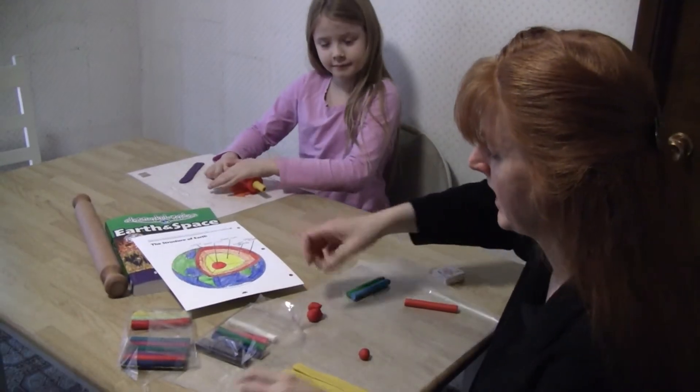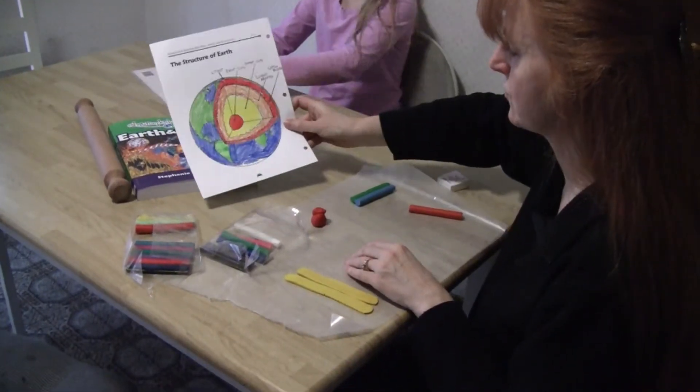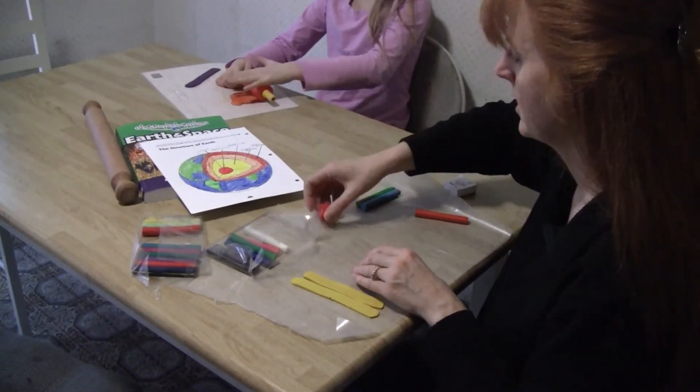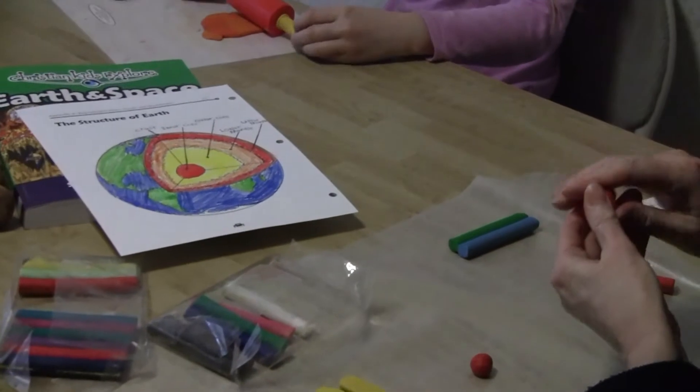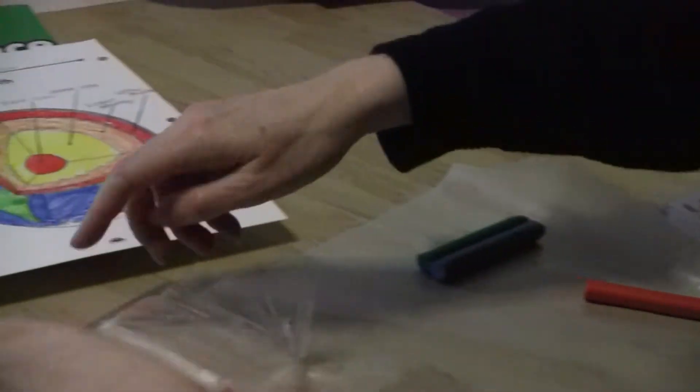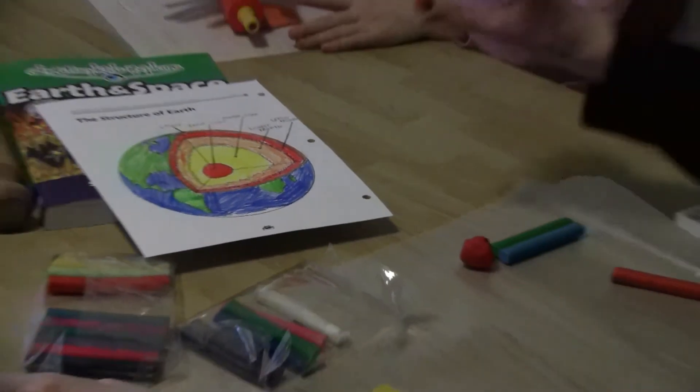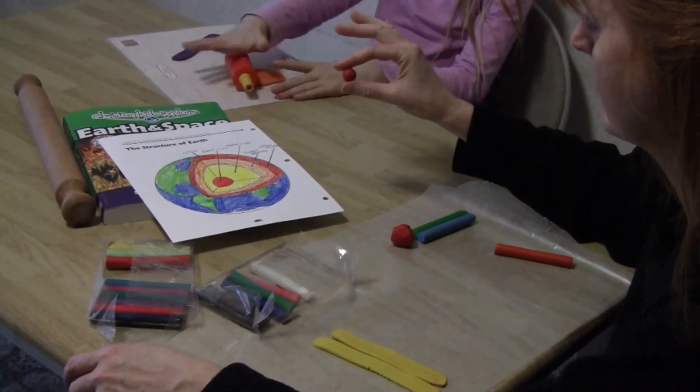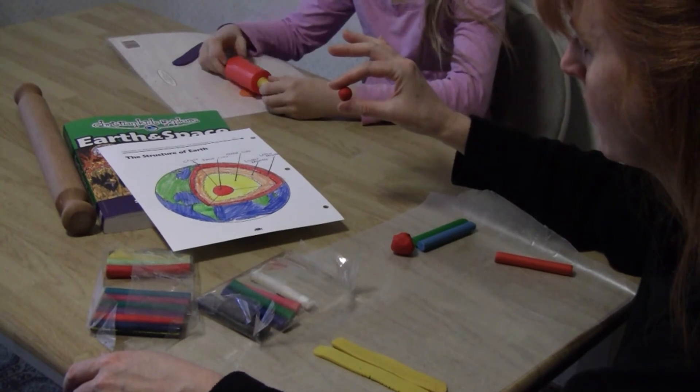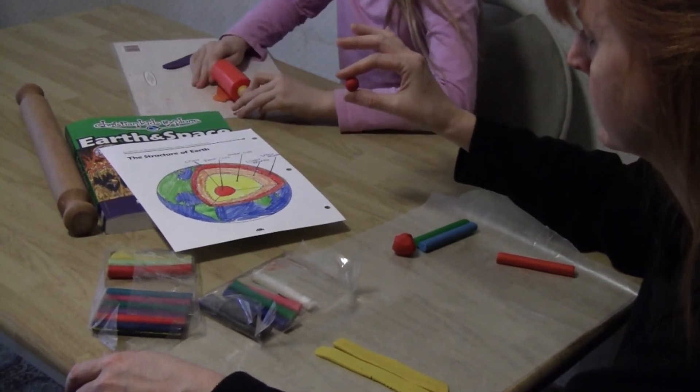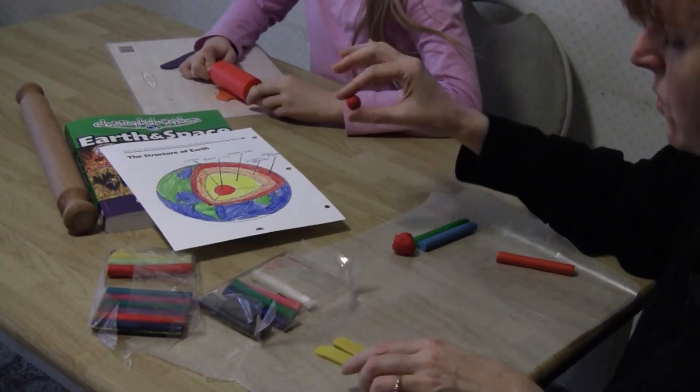We are making a clay structure of the earth, so it says to make a one inch ball, but because we don't have that much clay, we're going to do it on a smaller scale. So we have about maybe half an inch for our core, our inner core. Then we have an outer core, which is going to be yellow.